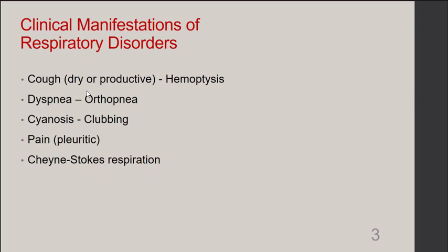Clubbing is seen with chronic cyanosis. Pain is interesting because the lungs don't have pain receptors, but when the lungs hurt it's when the pleura itself is inflamed — this is called pleuritic pain, and these individuals suffer pain when breathing. Cheyne-Stokes respiration can be seen in individuals with brainstem injury or increased intracranial pressure. It's a periodic abnormal breathing characterized by alternating periods of apnea and hyperventilation, seen in terminally ill or brain-damaged patients.